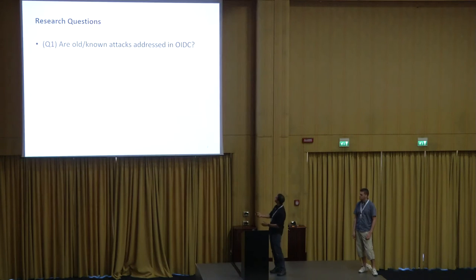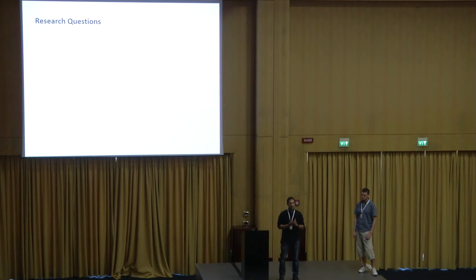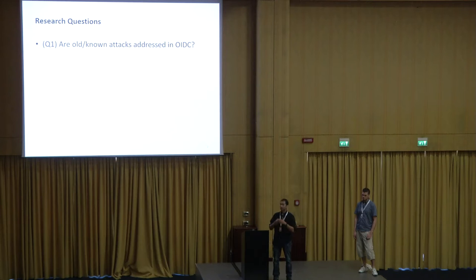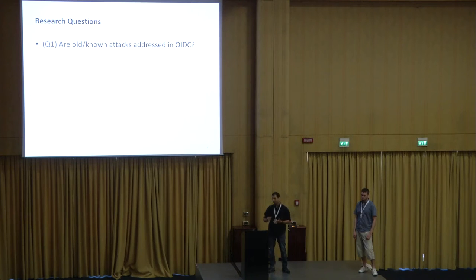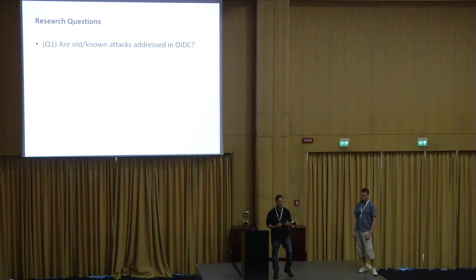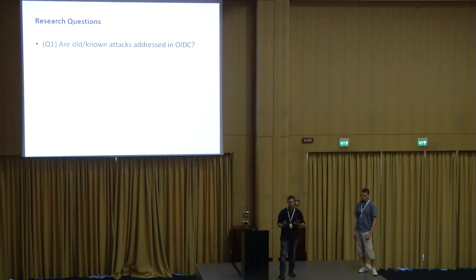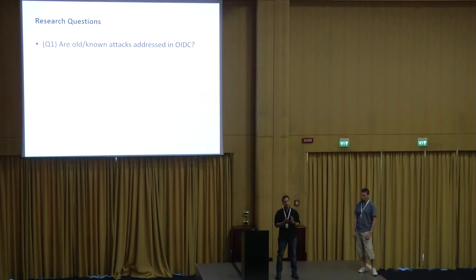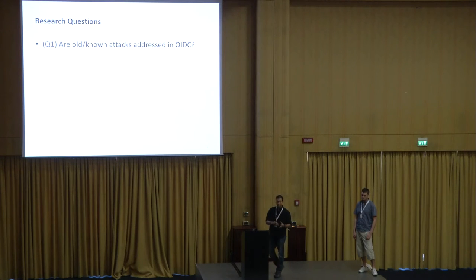At the beginning, we had three simple questions about the security. The first one was: are all known attacks addressed in OpenID Connect? We have great experience with protocols like SAML, BrowserID, OAuth, and OpenID. We asked ourselves, can we learn something from the attacks we already know and adapt them to OpenID Connect? Maybe come with a new idea — and we will show yes. The second question was: are all these known issues already addressed in the OpenID Connect specification? Some of them are, some of them are not.